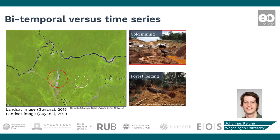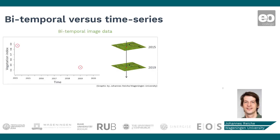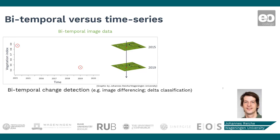These two images can now be used in a bitemporal change detection approach to map change. Looking at a particular point over time, we see the two observations from 2015 and 2019 plotted over time. What is shown is a vegetation index derived from the Landsat data. High values in 2015 indicate high vegetation cover, and low values in 2019 after the deforestation event indicate very low vegetation cover. Bitemporal change detection such as image differencing can now be used to map the change between the two images. This is relatively simple and easy to interpret.